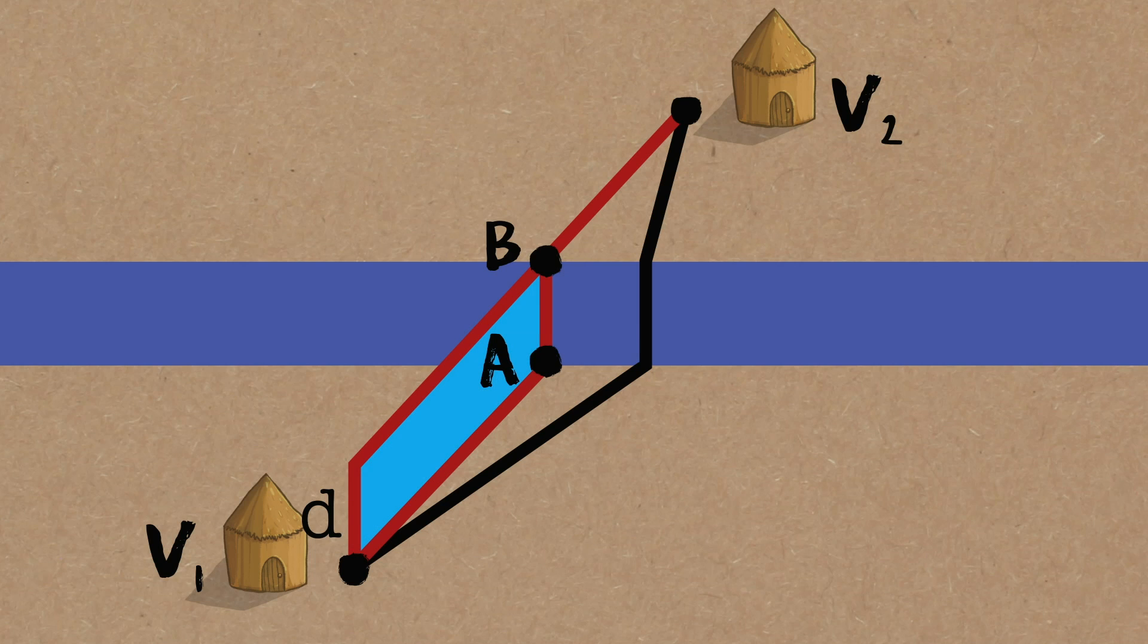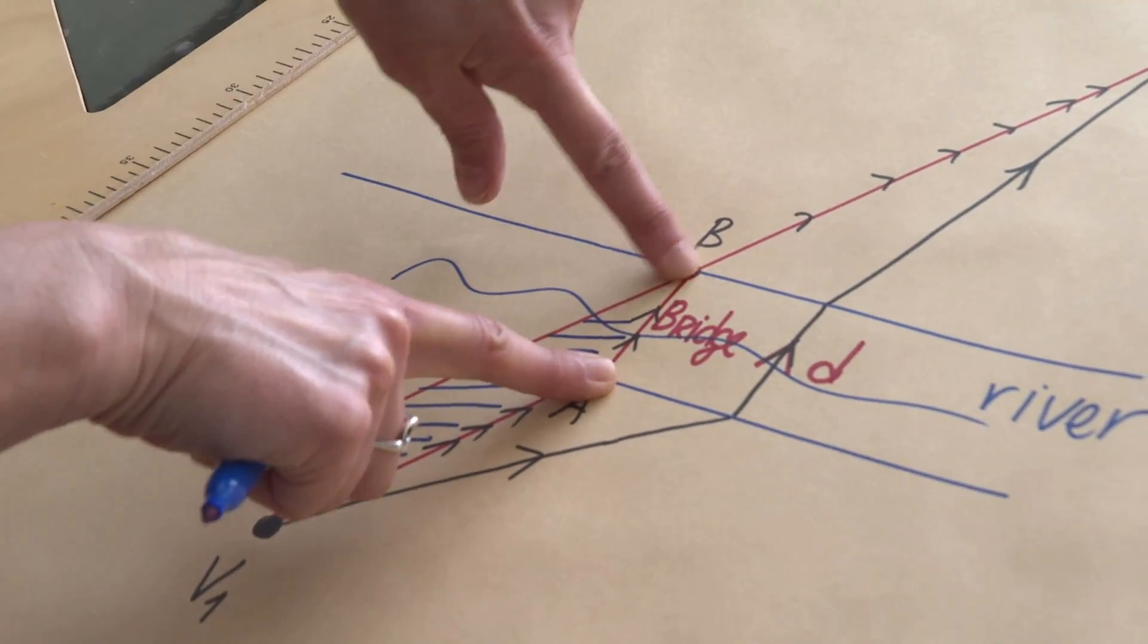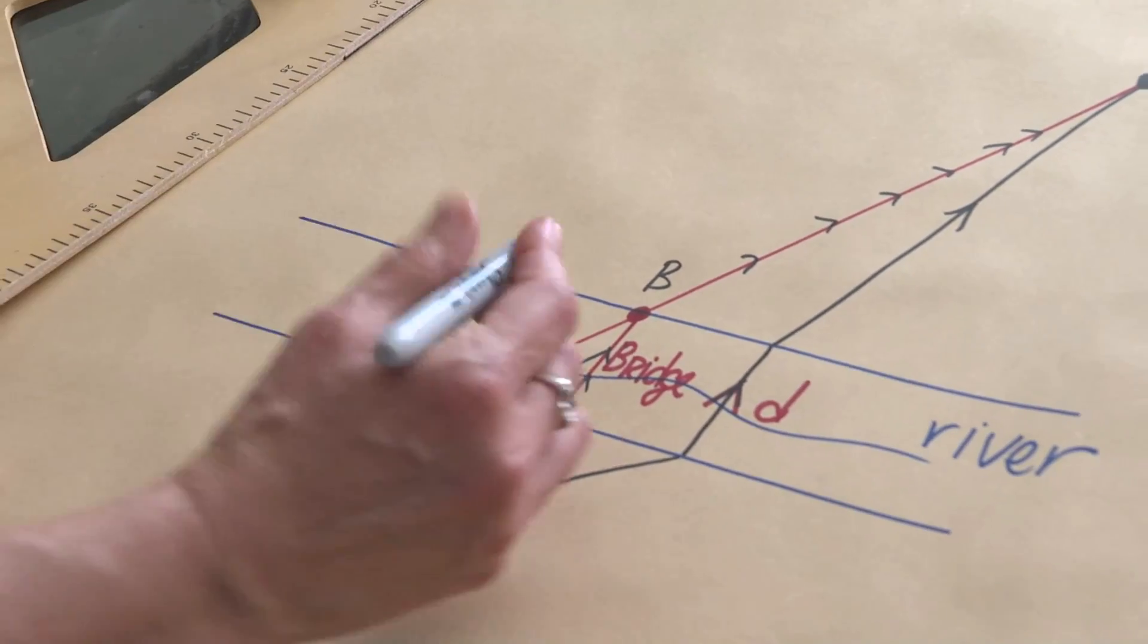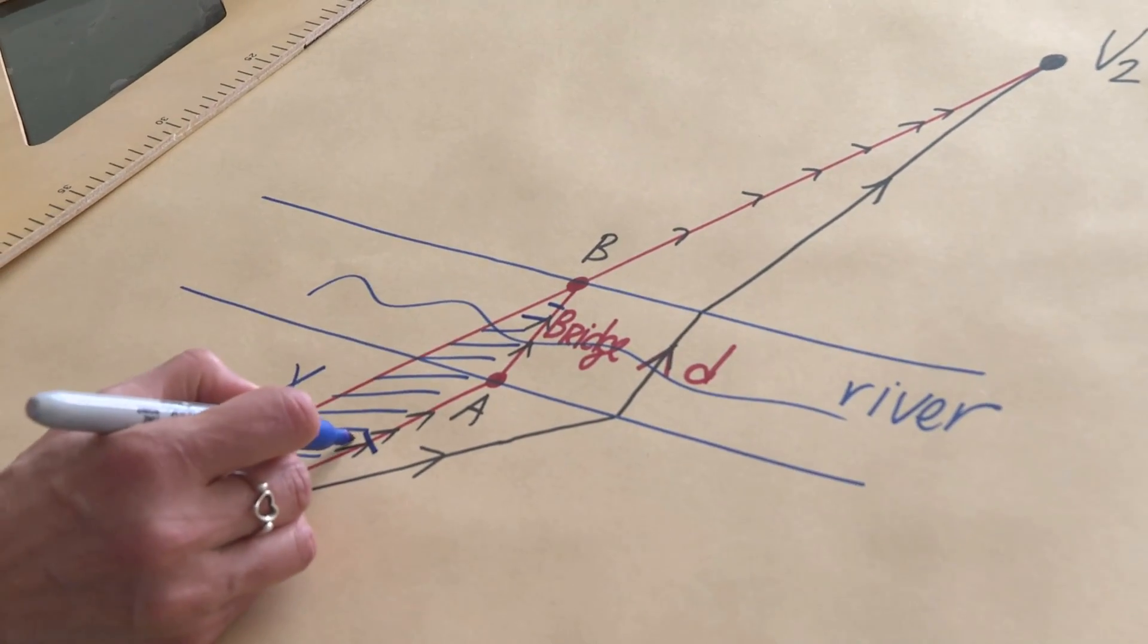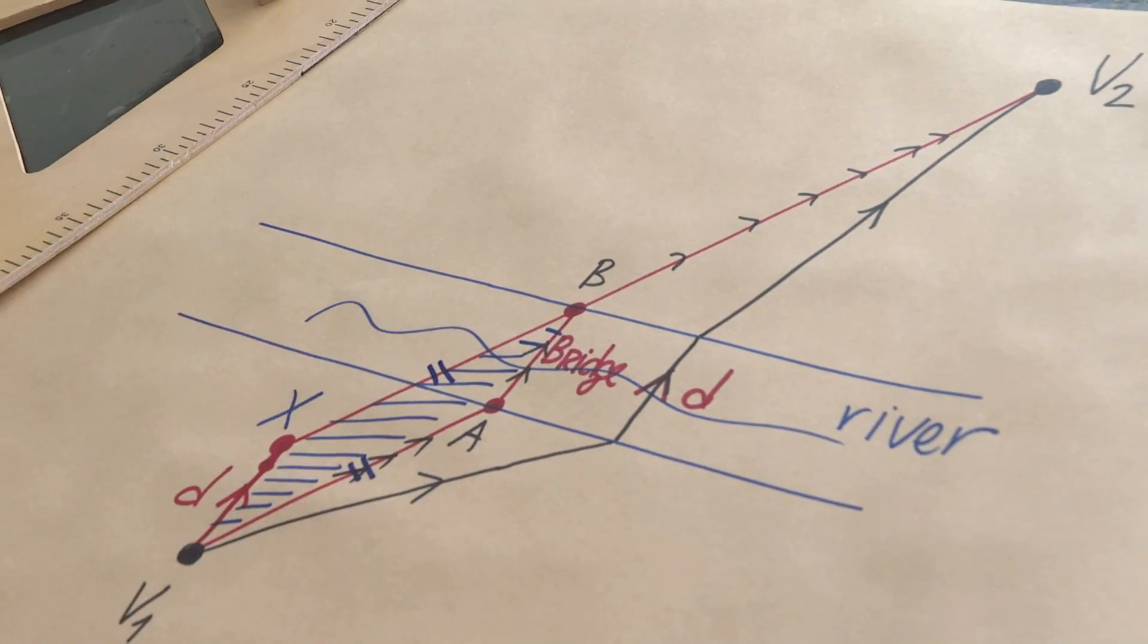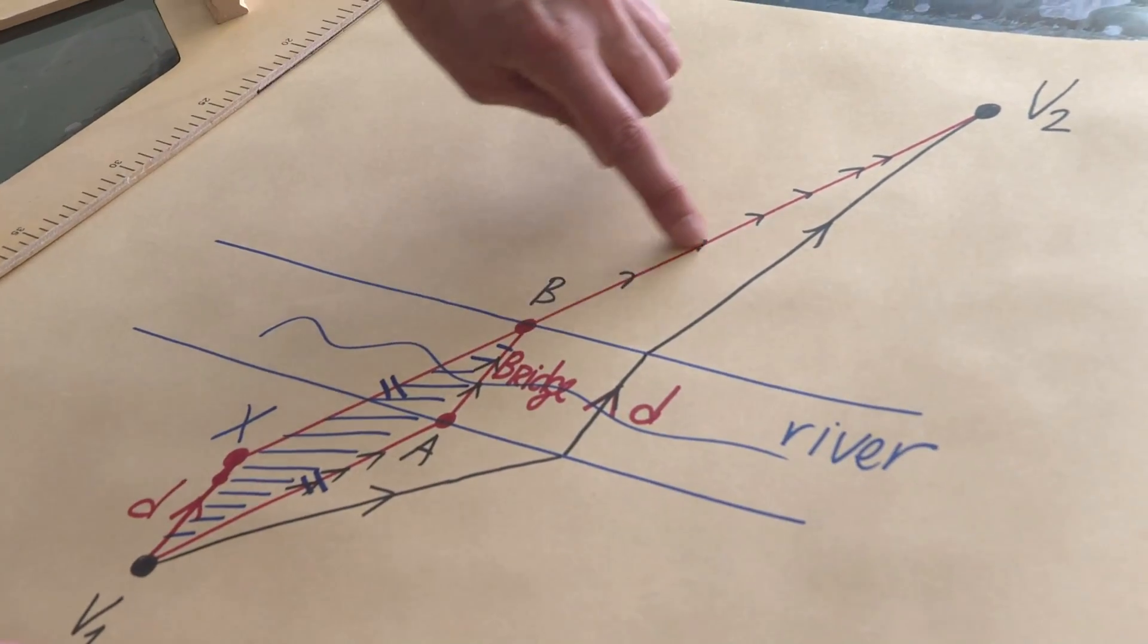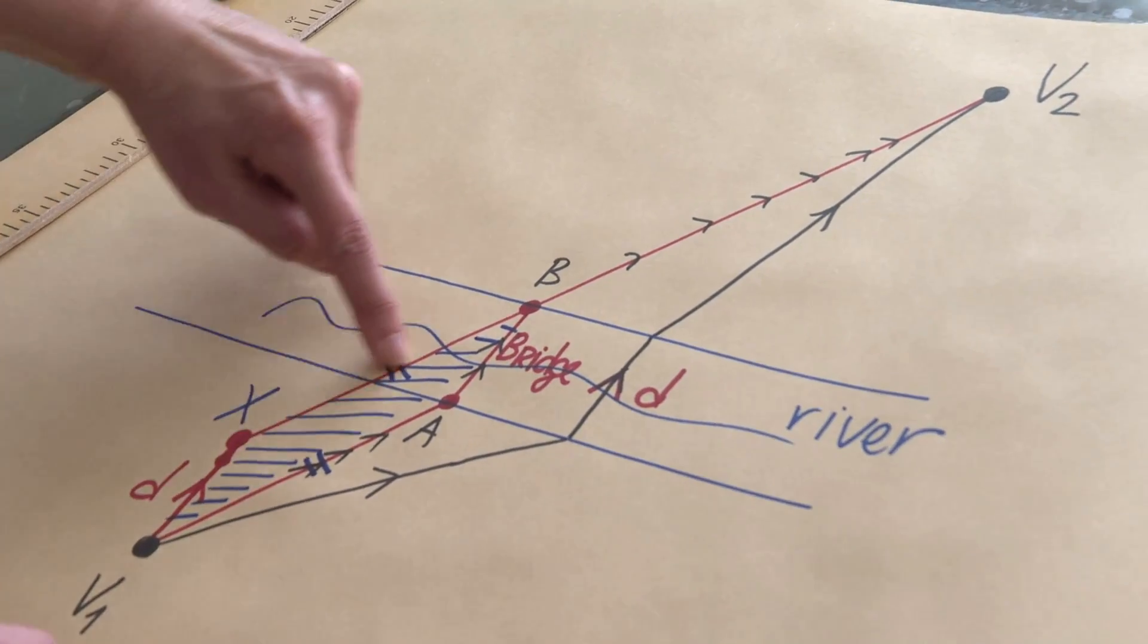Because when we said that I'm going to reverse the bridge back, this segment, the actual bridge, was parallel and equal to the segment V1X. And that makes this figure a parallelogram. Which means that whatever the villagers are going to first walk, that path is the same as this one. Right? And so they, in real life, are going to walk like this. But the length of that path is equal to this one.